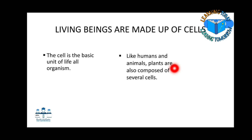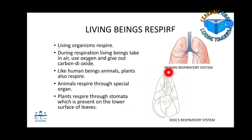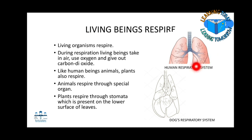Living beings are made up of cells — humans, animals, and plants all have cells. Living beings respire. During respiration, living beings take in oxygen and give out carbon dioxide. Like human beings, plants also respire. The respiratory system of animals varies from one animal to another. Plants respire through small pores present under the leaves, which are called stomata.